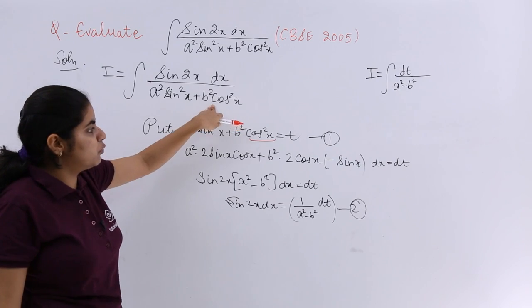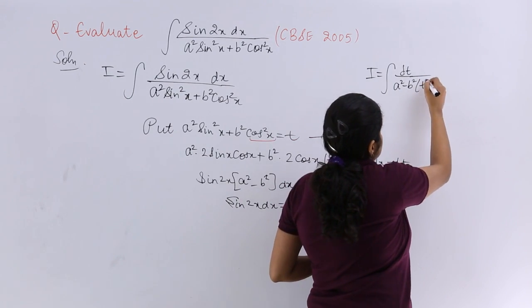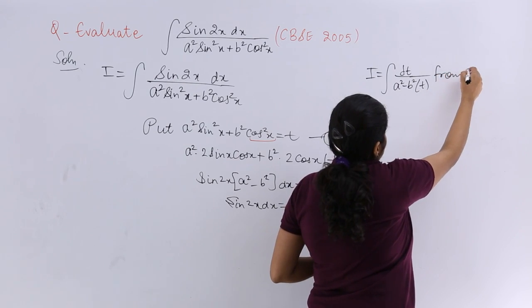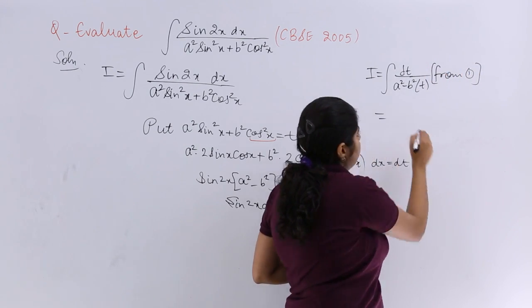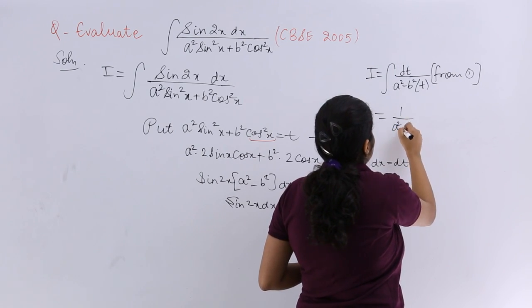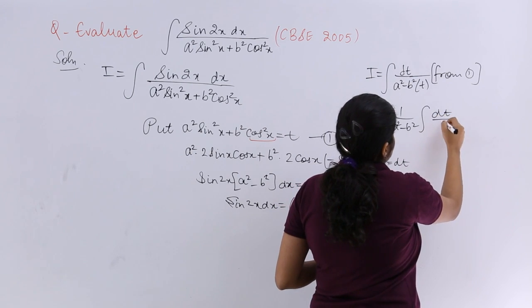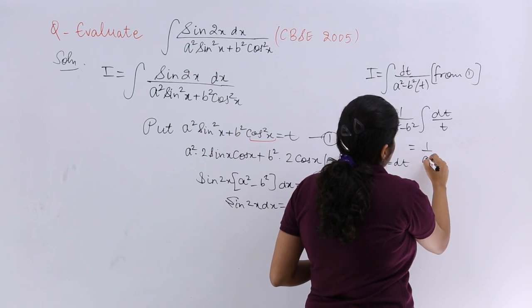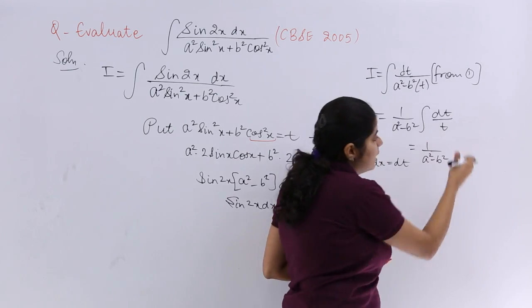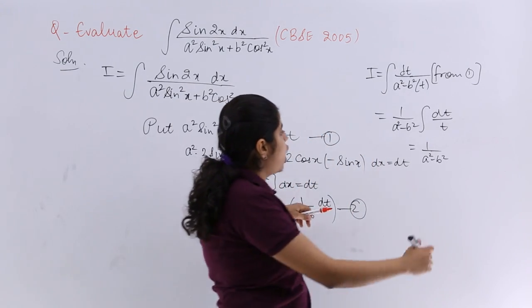And in the denominator we had what? We had nothing but t from equation number 1. So it is t, and that whole is from equation number 1. 1/t is there which is differentiable and integrable. 1/(a² - b²) constant outside. So it is dt/t. 1/(a² - b²) already there. What is the integration of 1/t? It is nothing but log t.